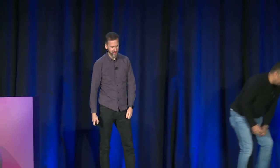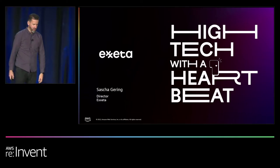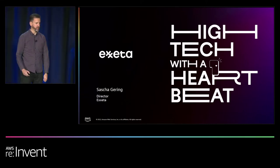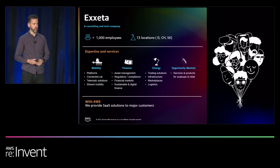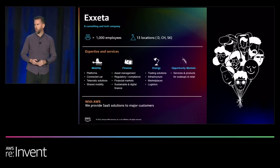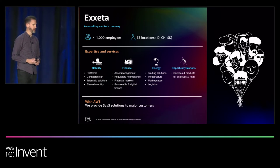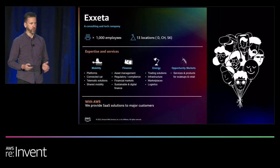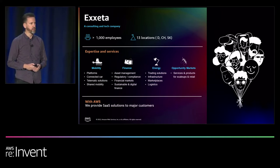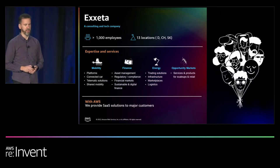Thank you, Gurinder. Good morning. My name is Sascha. I work as a director for Exeter, and our slogan is 'we deliver high-tech with a heartbeat.' Before I get to what we did with AppStream and why, let me briefly introduce Exeter. We have our headquarters in Germany, about 11 locations in Germany plus one in Switzerland and one in Slovakia, with about 1,200 employees. We drive innovation and digital transformation for large companies in Europe — building new applications from the ground up, extending or refactoring existing ones, delivering standard solutions, and running all these applications, mainly out of the cloud.